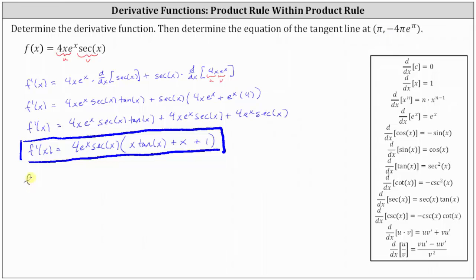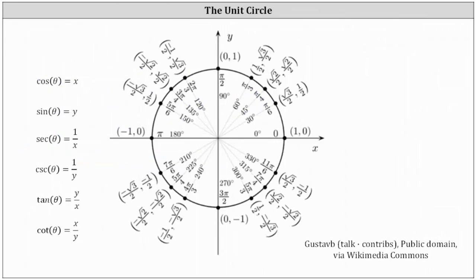So f prime of pi is equal to four e to the pi times secant pi times the quantity pi times tangent pi plus pi plus one. Now we need to find the value of secant pi and tangent pi. Secant pi equals negative one and tangent pi equals zero. On the unit circle, secant theta equals one divided by x. The terminal side of pi radians intersects the unit circle at the point negative one, zero, giving secant pi equal to one divided by negative one, or negative one. And tangent theta equals y divided by x, which gives zero divided by negative one, which is zero.